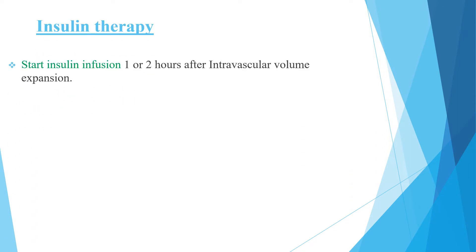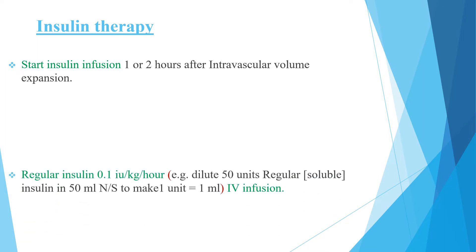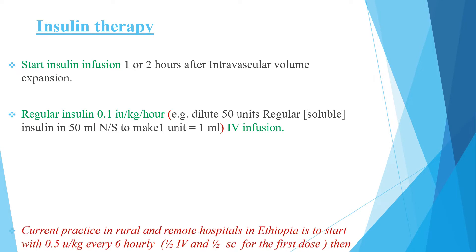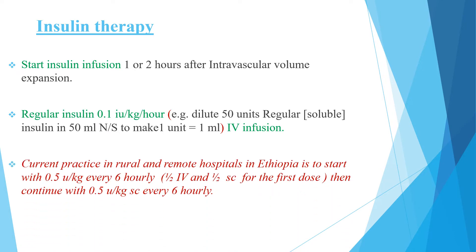Regarding insulin therapy: start insulin infusion one to two hours after intravascular volume expansion using regular insulin at 0.1 international units/kg/hour IV infusion. If there is no infusion pump — in rural or remote hospitals or clinics — we can start with 0.5 international units/kg every six hours, half IV and half subcutaneous for the first dose, then continue with 0.5 international units/kg subcutaneous every six hours until the patient is out of DKA.